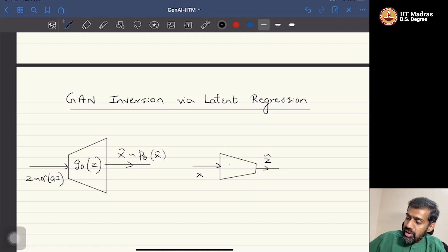This would take X and directly regress Z here, Z cap. Let us call this E_φ of X cap. So there is still the discriminator, but the discriminator would just function as it is, as in the case of ByGAN. This is D_w. So now D_w simply separates between X and X cap as usual.